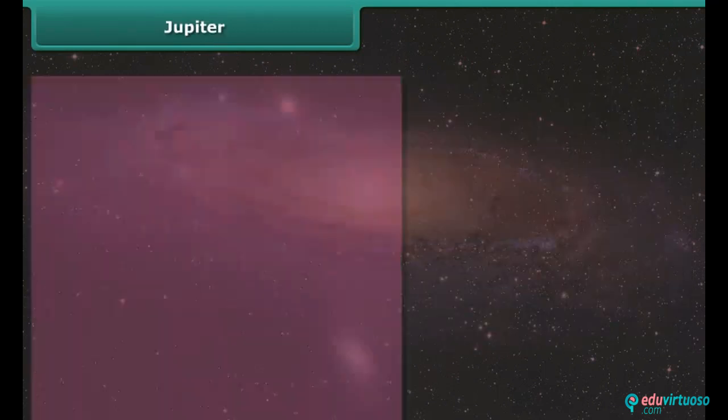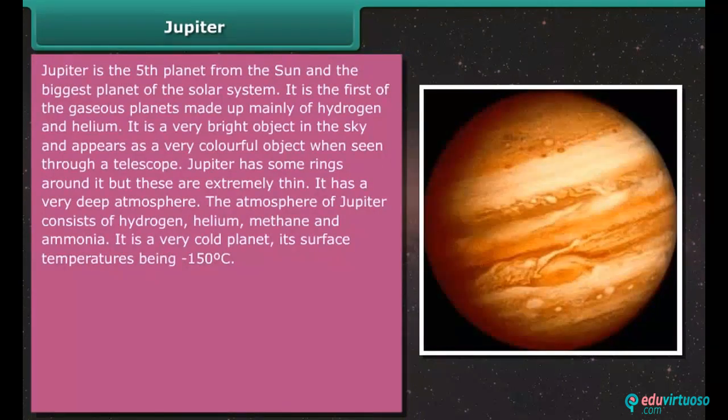Jupiter. Jupiter is the fifth planet from the sun and the biggest planet of the solar system. It is the first of the gaseous planets, made up mainly of hydrogen and helium. It is a very bright object in the sky and appears as a very colorful object when seen through a telescope. Jupiter has some rings around it, but these are extremely thin.